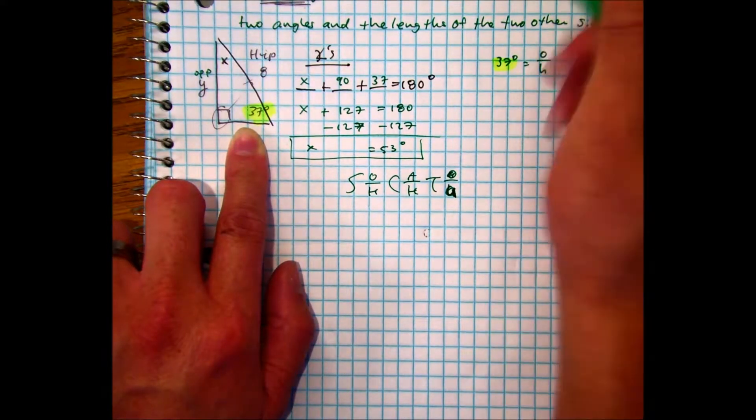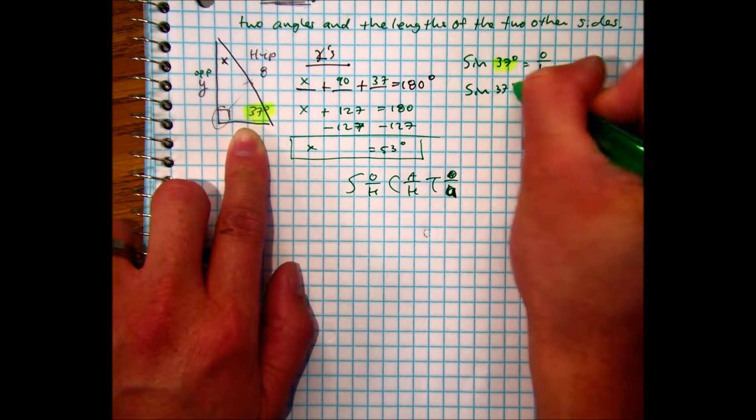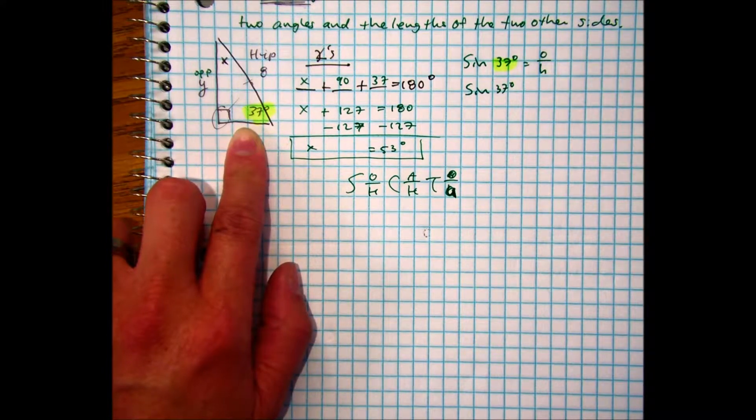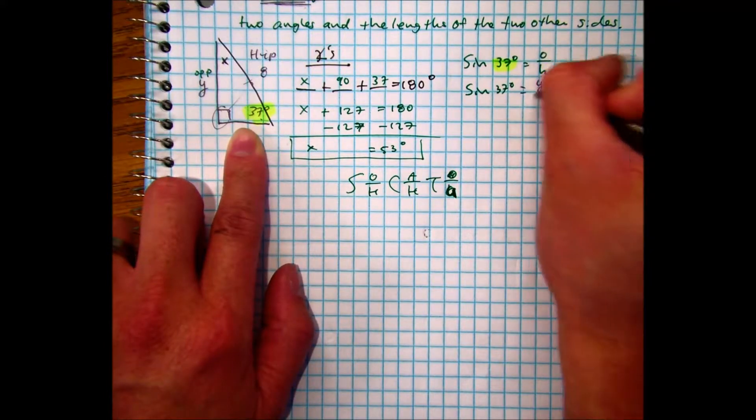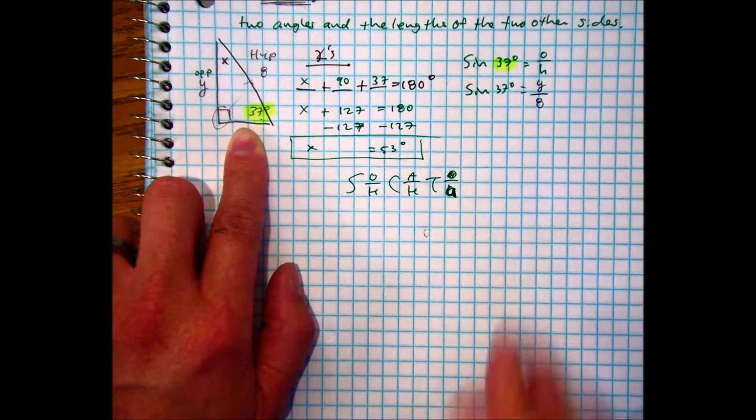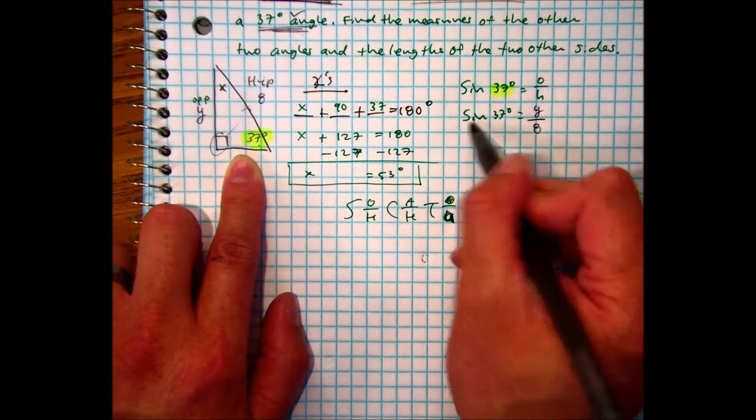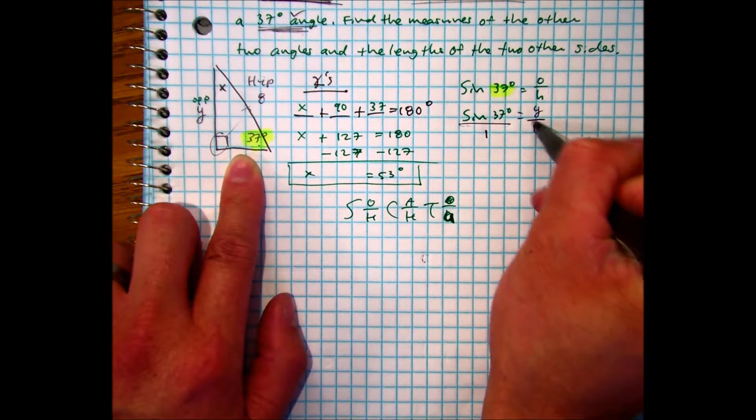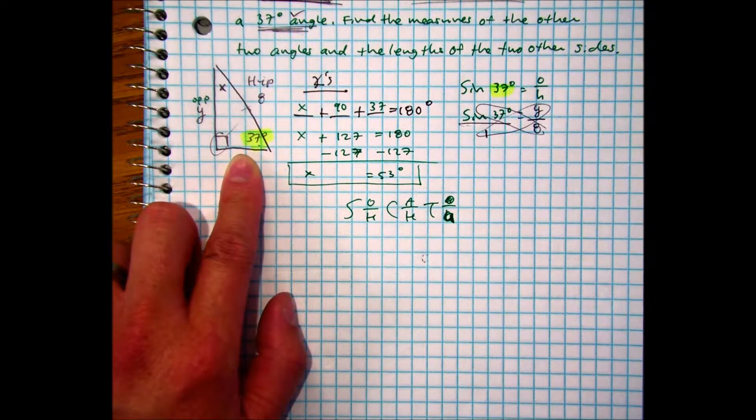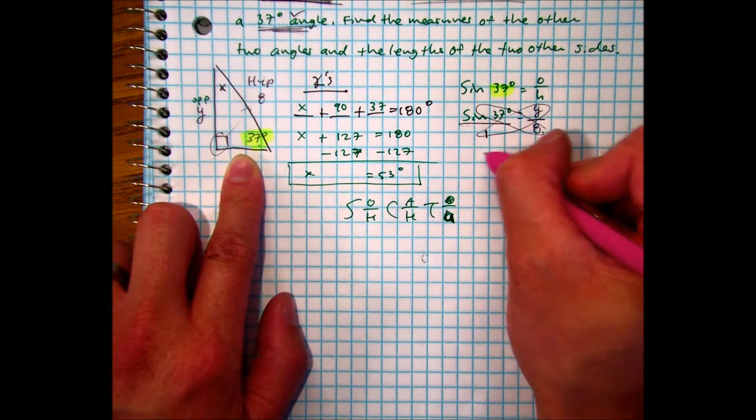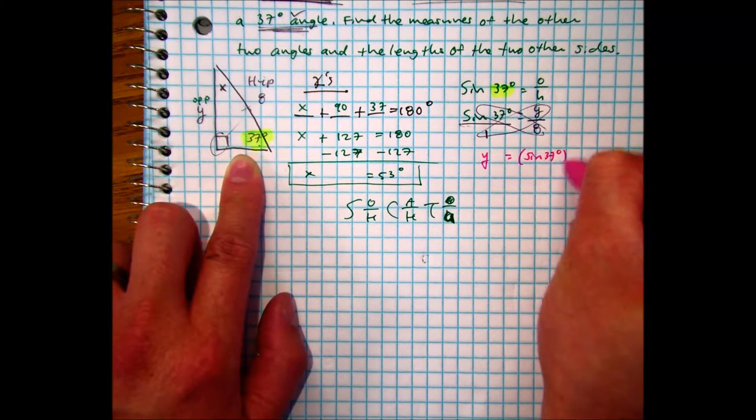SOH-CAH-TOA. So that gives us sine of 37. And then I'm just going to substitute what we have. I have the opposite, which is the y variable, and the hypotenuse, which is 8. Here I can just make sine of 37 a fraction. I can cross multiply.